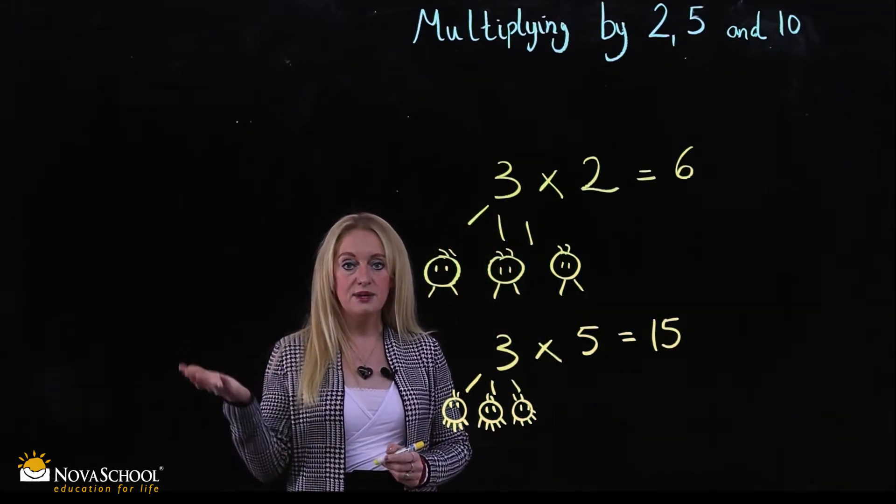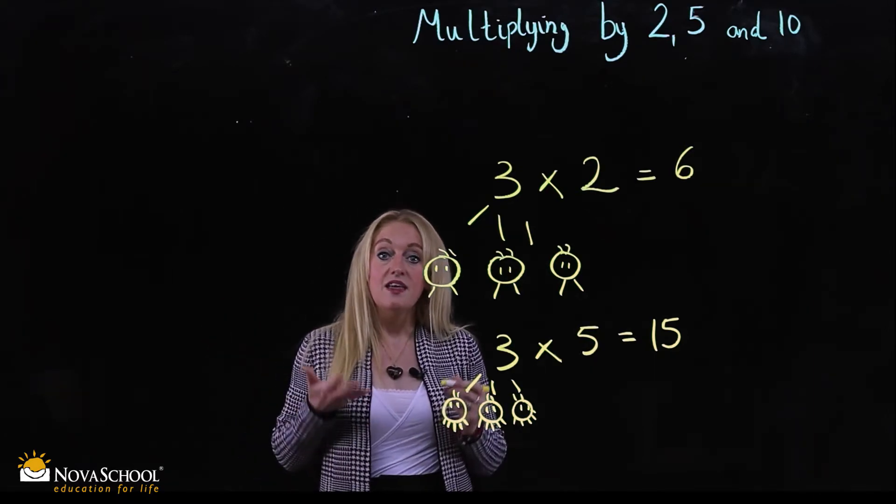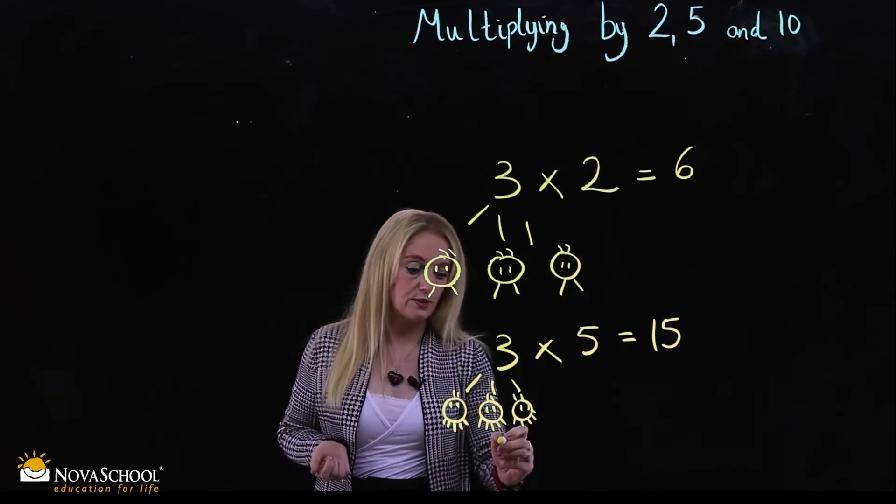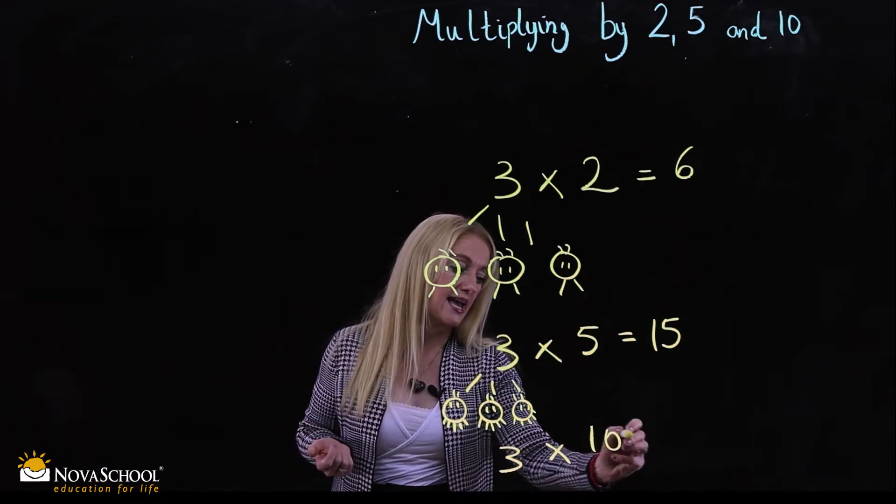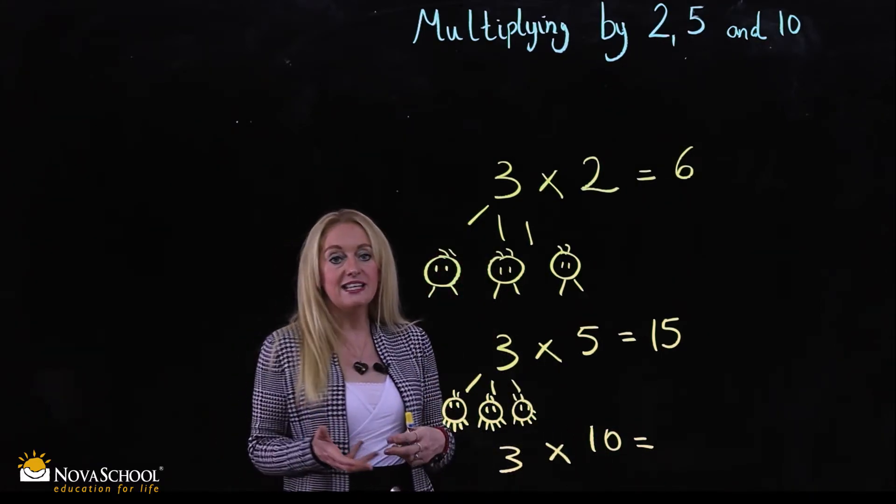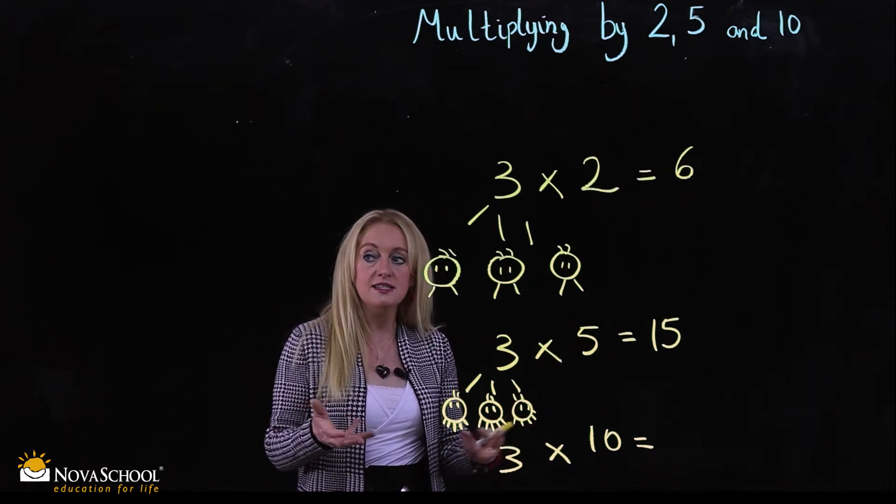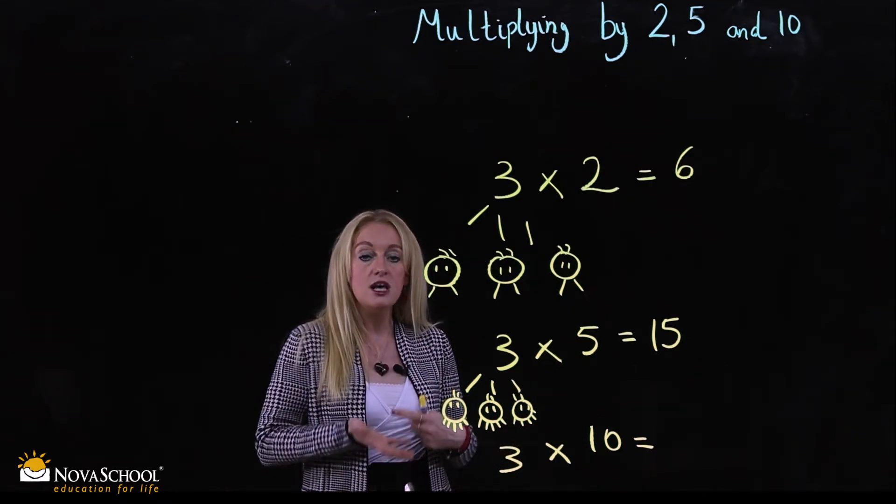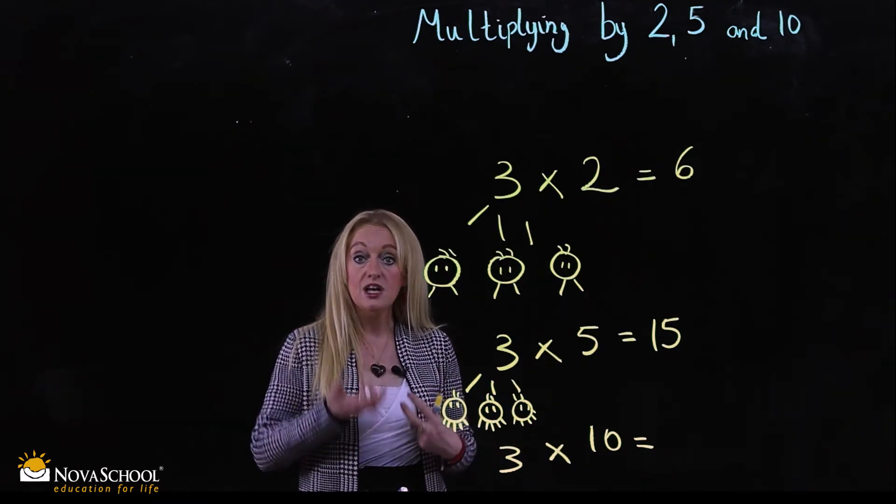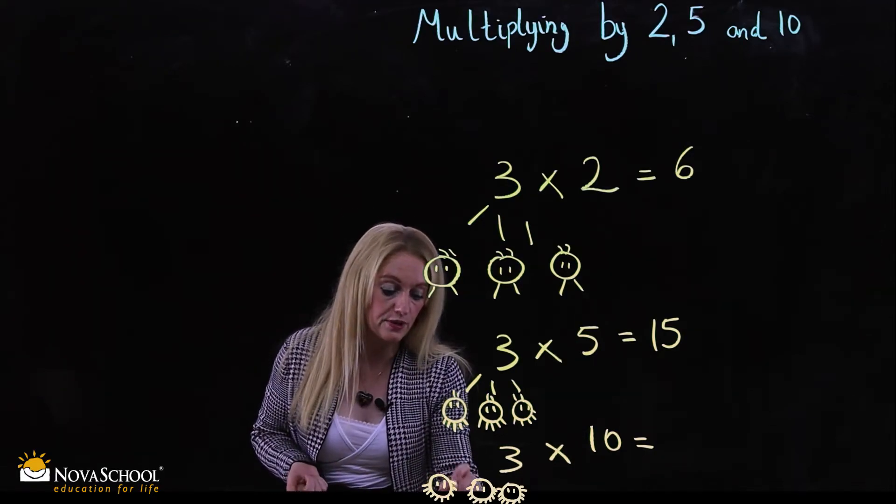The final image of the monsters is they have ten legs. So let's go with the three again. Three times ten. This method again. We have the three monsters. They all have ten legs. What do we do? We count the legs. So we've got our three monsters.